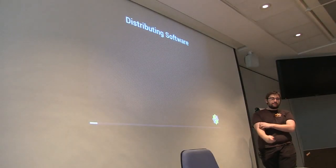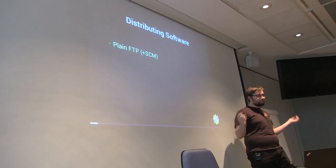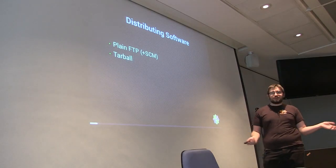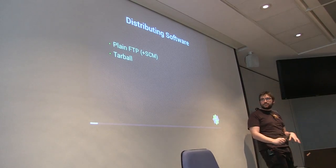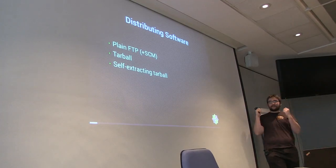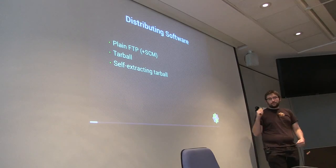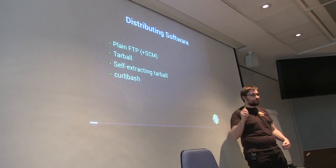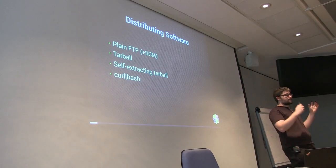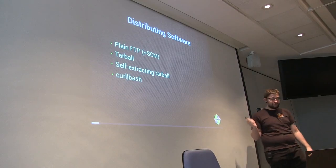So how do people distribute software? There are a lot of options. Some people do it with plain FTP, maybe with SCM, maybe not. People also use tarballs — sending tarballs by mail or putting them on any location. Then you have people who are more advanced: they use self-extracting tarballs. You just run that blob file and it inserts everything. Then there is remote code execution — curl pipe bash — which a lot of Ruby developers do because it works on every distribution. But you first need to read that bash script to be sure it won't screw up your system.